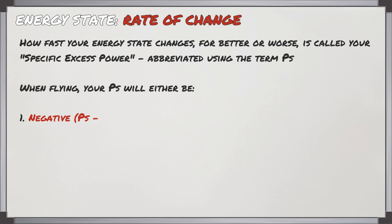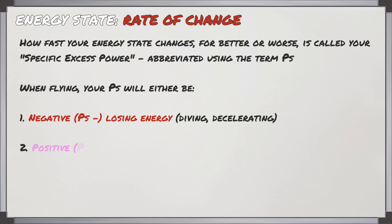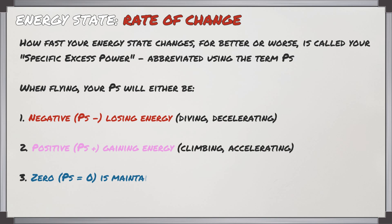When you're flying, your P-sub-S will either be negative and you'll be losing energy, positive and you'll be gaining energy, or it'll equal zero — in which case you're maintaining energy, just as if you're maintaining a constant altitude and airspeed.